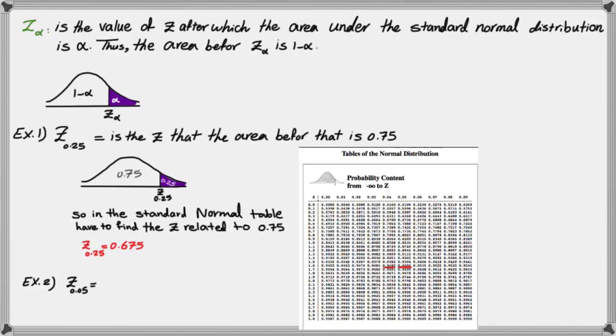So if I find 0.95, again, it falls between these two numbers, which are 1.64 and 1.65. I take the average of the two and I have 1.645 as the value of Z of 0.05.